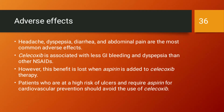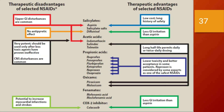Adverse effects of celecoxib include headache, dyspepsia, diarrhea, and abdominal pain. Celecoxib is associated with less GI bleeding and dyspepsia than other NSAIDs; however, this benefit is lost when aspirin is added to celecoxib therapy. Patients at high risk of ulcers who require aspirin for cardiovascular prevention should avoid celecoxib. Celecoxib has cardiovascular effects, and sometimes aspirin is added to the therapy, but in patients with high propensity for ulceration, celecoxib should be avoided altogether.